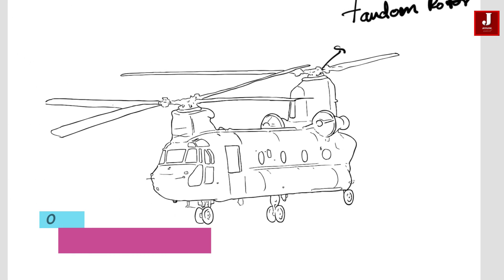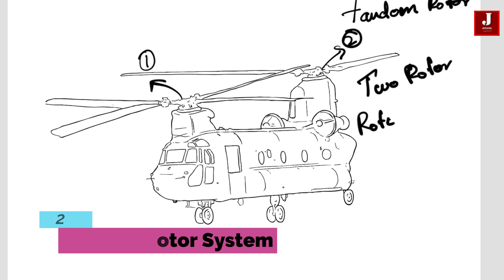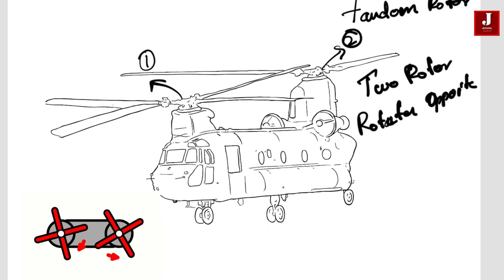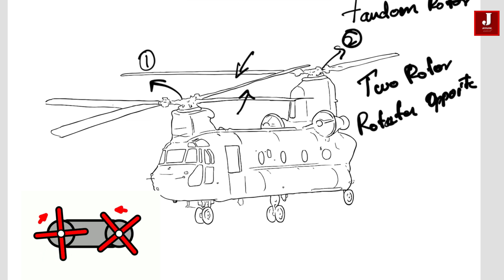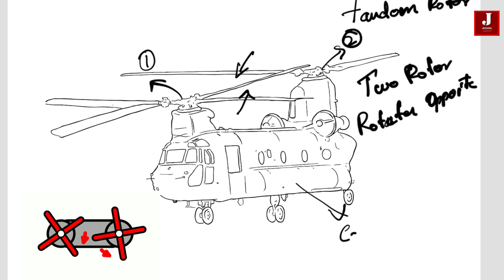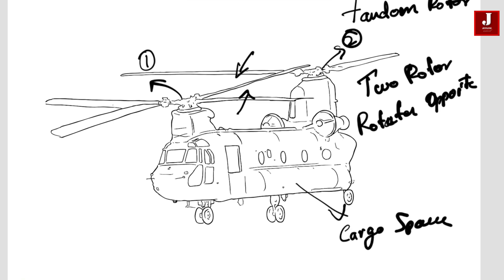Next, there's the tandem rotor system, which features two parallel rotors of equal size that rotate in opposite directions. This counter-rotation helps to cancel out the torque that each rotor would produce, resulting in a balanced and stable flight profile. This configuration is typically employed in heavy lift helicopters, such as the CH-47 Chinook.